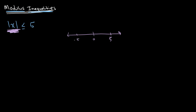The absolute value of x is less than or equal to 5, which means that the absolute value of x falls somewhere within the range between negative 5 and 5. So we can write this out as: the value of x is going to be less than or equal to 5 and greater than or equal to negative 5.